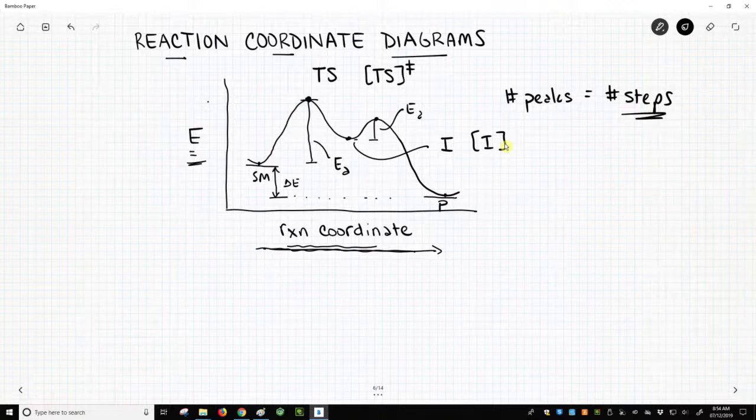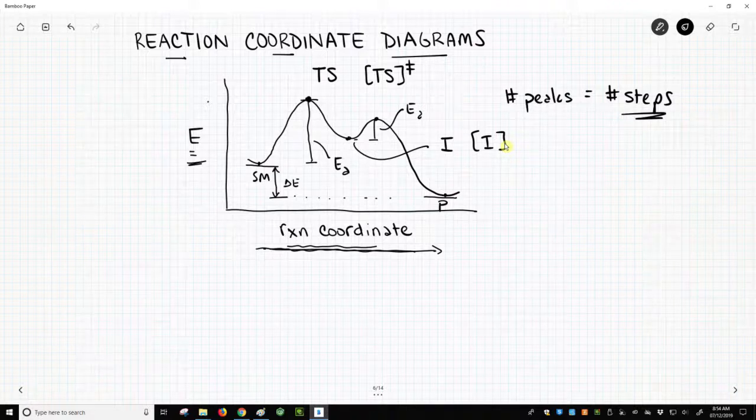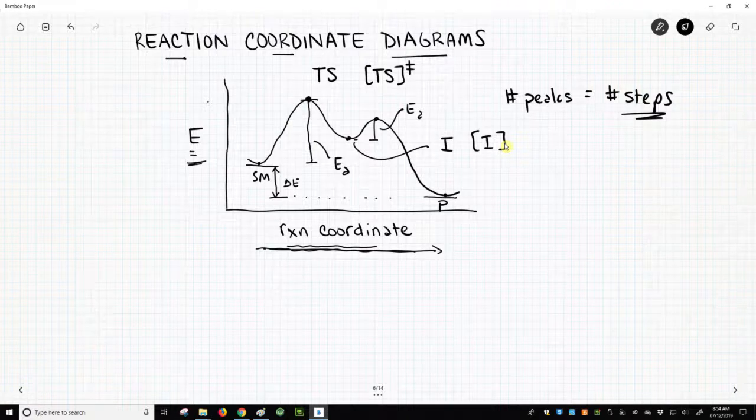we'll very often draw a reaction coordinate diagram as a way to communicate how does this reaction proceed, and we'll use that to determine how do we figure out what the mechanism for that process will be.